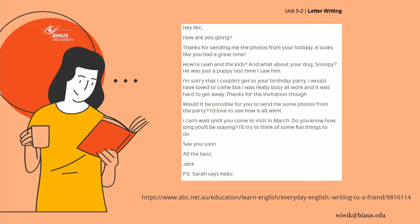You begin by asking about your friend's kids and also their dog — it's kind of chit chat. After that comes your main message. For example: I'm sorry that I couldn't get to your birthday party. I would have loved to come. Then you mention the reasons why you could not come — that is the content of your email.